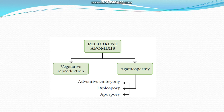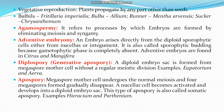Agamospermy is classified into three types: adventive embryony, diplospory, and apospory. In vegetative reproduction, plants propagate by any part other than seed — examples: bulbil (Fritillaria), bulb (Allium), runner (Mentha arvensis), sucker (Chrysanthemum). Agamospermy refers to the process by which embryos are formed while eliminating meiosis and syngamy. In adventive embryony, an embryo arises directly from a diploid sporophytic cell from either the nucellus or integument — it is called sporophytic budding, as the gametophytic phase is completely absent. Adventive embryos are found in Citrus and Mangifera.